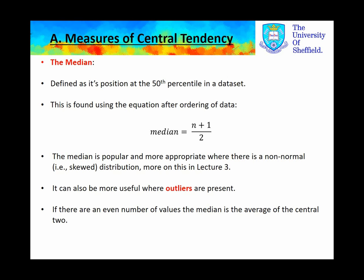The Median is quite simply the 50th percentile in the data set, the data point which is the 50th percentile point in the data set. The Median is much more popular and more appropriate where there is a non-normal skewed distribution, which we'll go into much more detail in Lecture 3. We can calculate the Median by adding the total number of data points in the data set, add one to it, and divide it all by two. If there are an even number of values, the Median is the average of the central two.